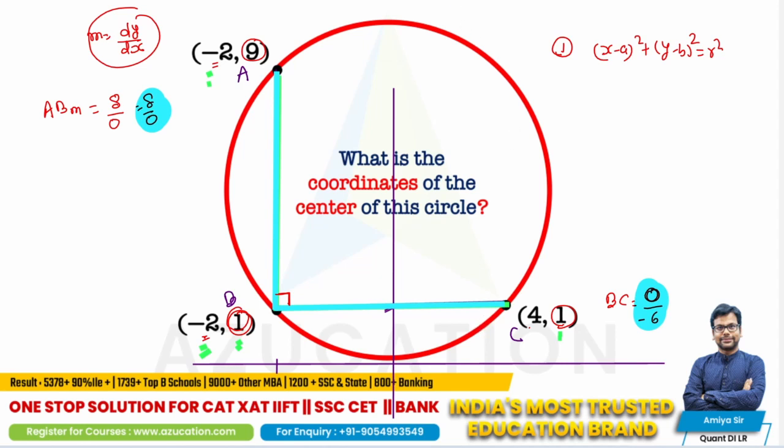If these two lines are perpendicular, then we definitely say the AC line is going to be the diameter. How comes? Because only diameter can create angle 90 degrees on the perimeter. So if AC line is our diameter, it means the midpoint of AC line is going to be our center of the circle.